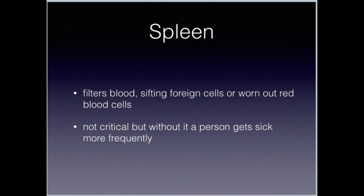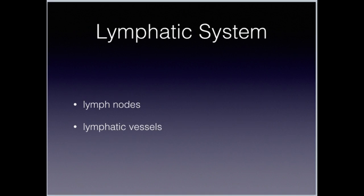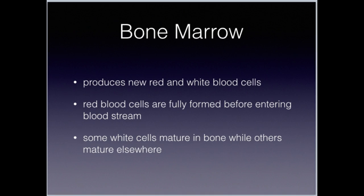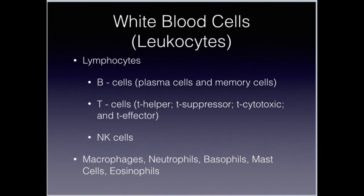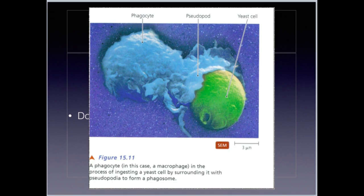The thymus, spleen, lymph nodes, and bone marrow — we've talked about white blood cells in general. Here is an example of a white blood cell, a phagocyte, phagocytosing a yeast cell. The little pseudopods — part of the cell membrane — just wrap themselves around the foreign product and take it inside, where it is then engulfed.